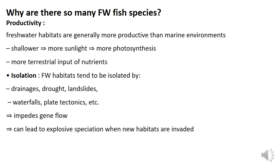Freshwater habitats tend to be isolated by drainage, drought, landslides, waterfalls, and plate tectonics. Climate is also involved in determining fish biogeography. Because freshwater habitats are naturally fragmented by geological barriers, certain species develop different populations in different areas. This geological isolation, involving surface topography, can lead to explosive speciation when new habitats are invaded. In contrast, marine habitats are more connected, separated mainly by continents.